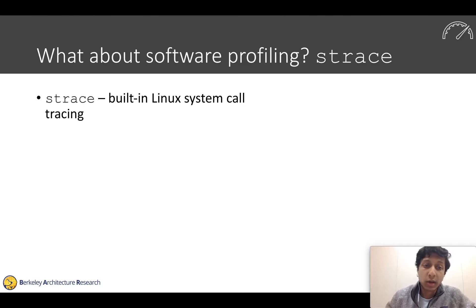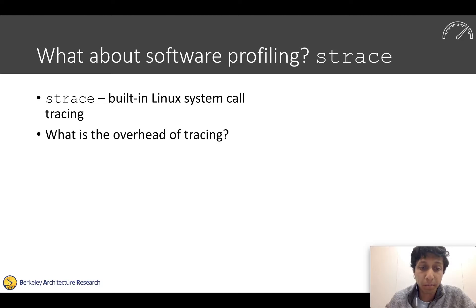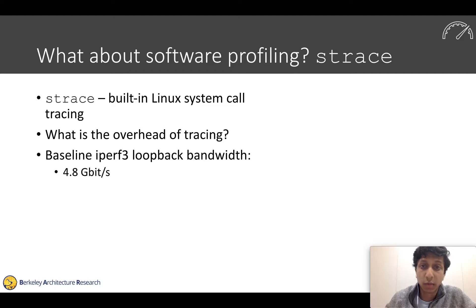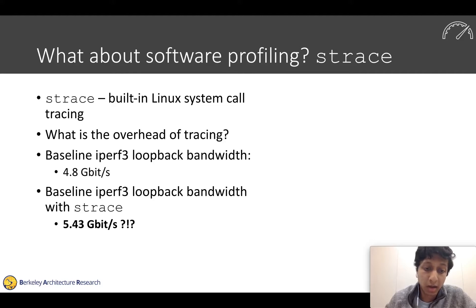As a quick aside, we might ask about those software profiling tools. We can try something simple like strace to understand the sequence of system calls our application is making. If we look at our baseline loopback number running iPerf3, we get 4.8 gigabits per second. Oddly, when we run this exact benchmark inside strace, our performance actually improves — a pretty confusing result that I'll explain shortly.